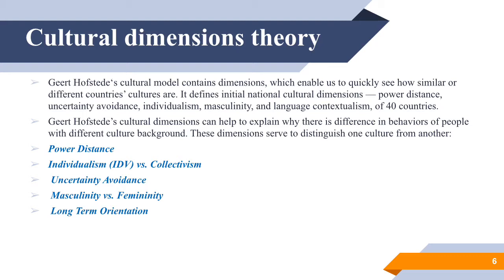The power distance dimension relates to the degree of equality and inequality between people in a particular society. A low power distance indicates that a society does not emphasize differences in people's status, power, or wealth — equality is seen as the collective aim of society and upward mobility is common. The UK score in this dimension is 35, indicating that rank, status, and inequalities between people are reasonably low. On a macro level this manifests in legislation protecting ethnic minorities' rights; on a micro level, relationships between superiors and subordinates are casual and incorporate little ceremony.